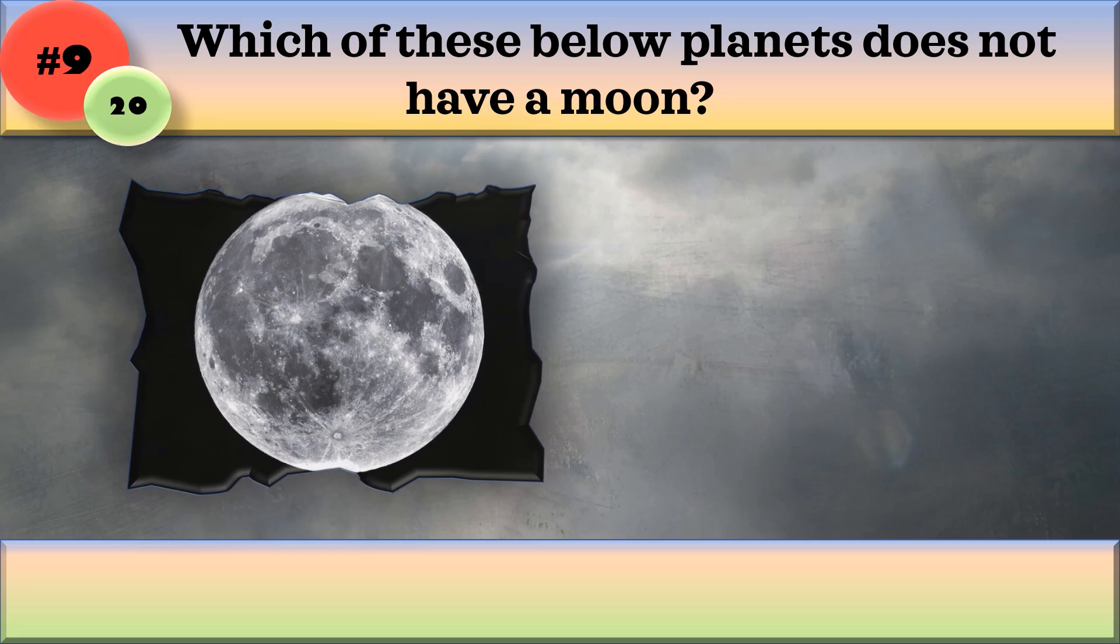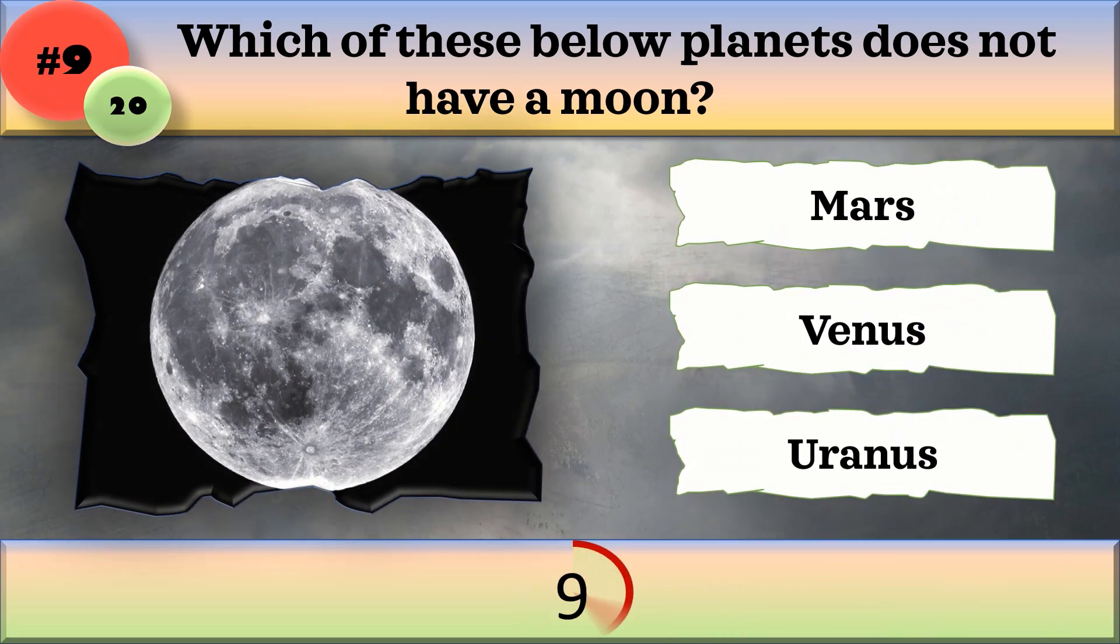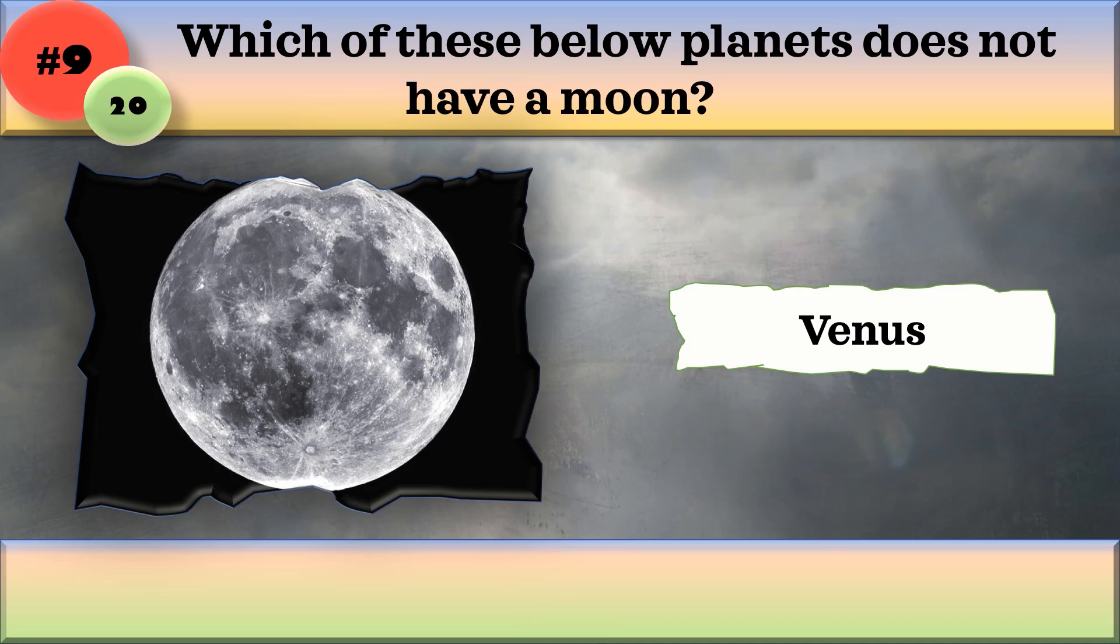Which of these below planets does not have a moon? Mars, Venus, or Uranus? The correct answer is Venus.